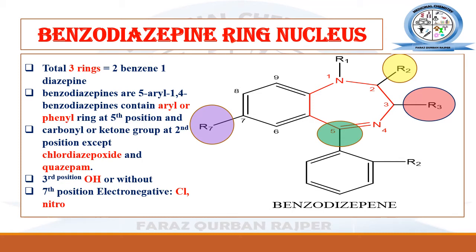To draw the structure, first draw the benzene ring, then the diazepine ring fused with it, and at the fifth position draw another benzene ring. Depending on the type of benzodiazepine, place different functional groups: at the second position the carbonyl group (except chlordiazepoxide and quazepam), at the third position optionally a hydroxyl group, and note the double bond between the fourth and fifth position.